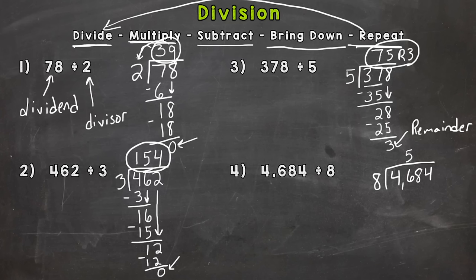So 46 divided by 8 is 5. And that gets us to 40. So we multiply now. 5 times 8 is 40. Subtract 46 minus 40 is 6. And then we bring down the 8. So we have 68.